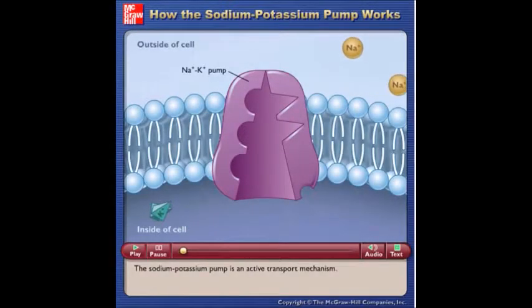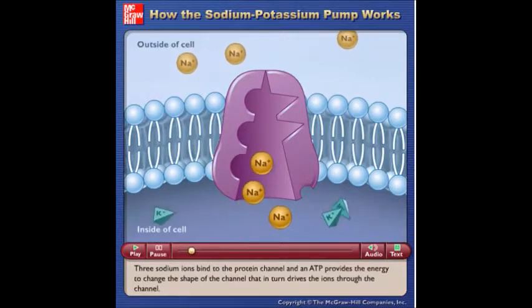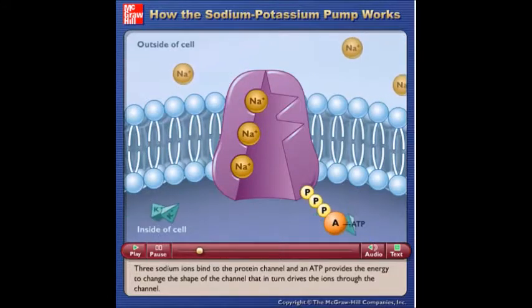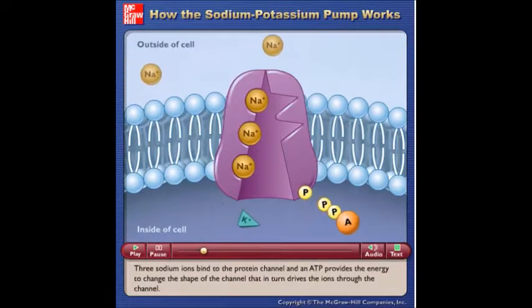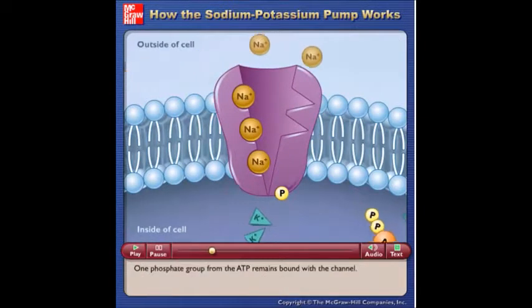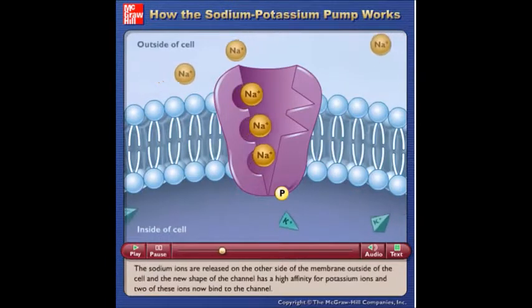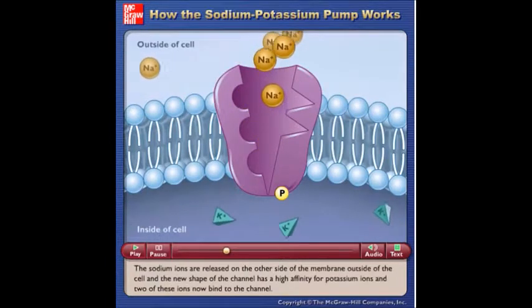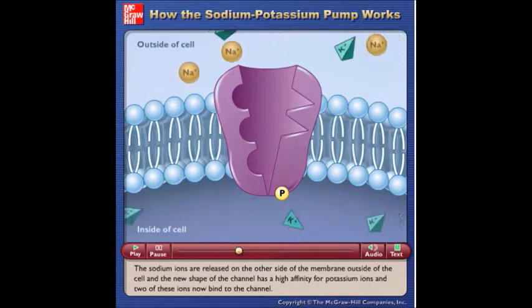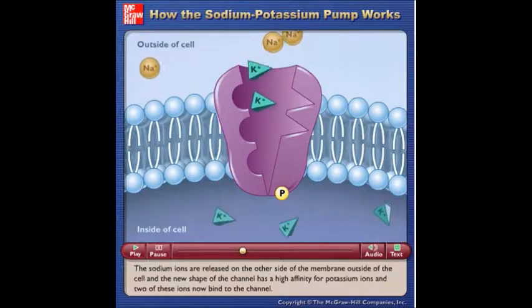The sodium-potassium pump is an active transport mechanism. Three sodium ions bind to the protein channel and an ATP provides the energy to change the shape of the channel that in turn drives the ions through the channel. One phosphate group from the ATP remains bound with the channel. The sodium ions are released on the other side of the membrane outside of the cell and the new shape of the channel has a high affinity for potassium ions and two of these ions now bind to the channel.